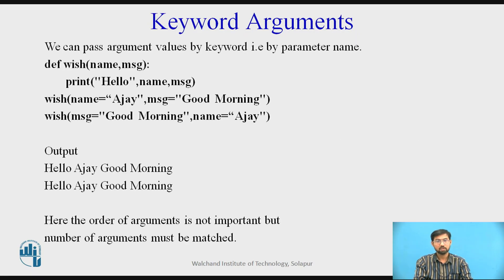Let us move ahead with keyword arguments. We can pass the argument values by keyword, that is by parameter name. For example, we are defining wish(name, message). Wish name equals Ajay and message equals good morning. Wish message equals good morning, name equals Ajay.